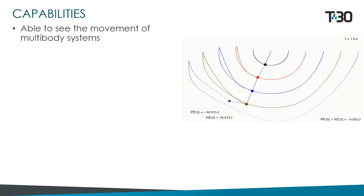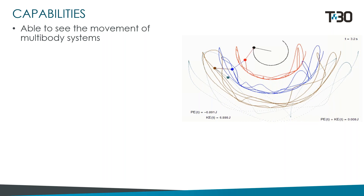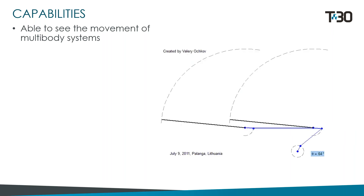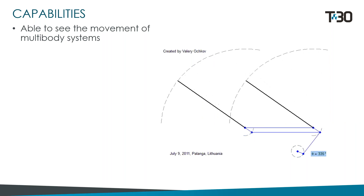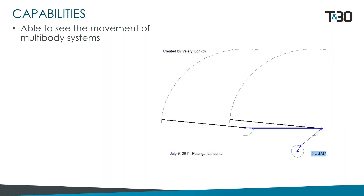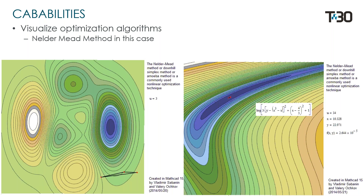You could also look at the movement of multibody systems, such as this five-member pendulum, and measure the potential energy and kinetic energy of the pendulum over the course of its movement as the animation runs. In addition, you could look at various mechanisms such as a windshield wiper with animations to make it easier to visualize. You could also visualize optimization schemes such as this downhill simplex method, where you can see the triangle converging onto the lowest point in the curve.